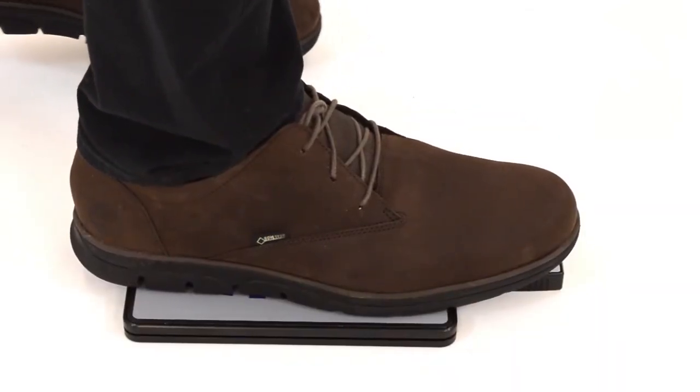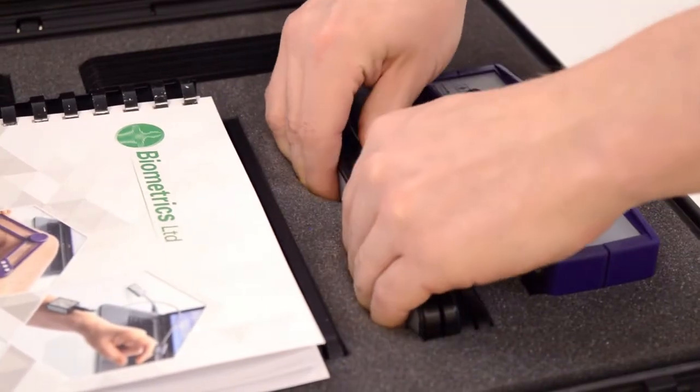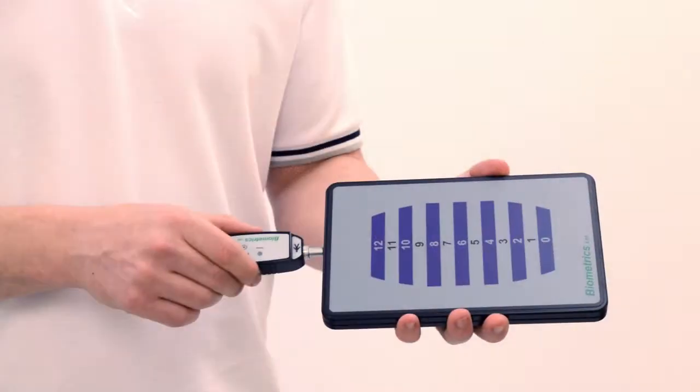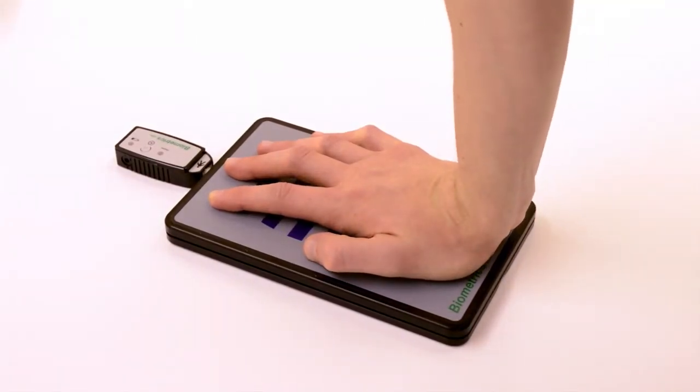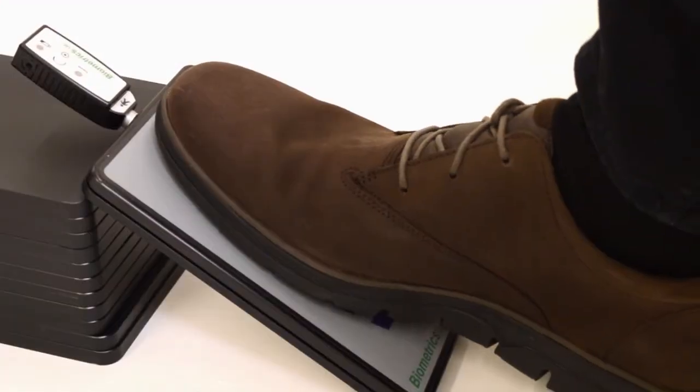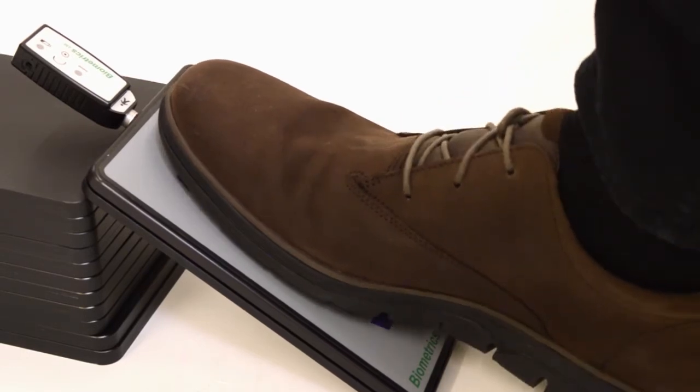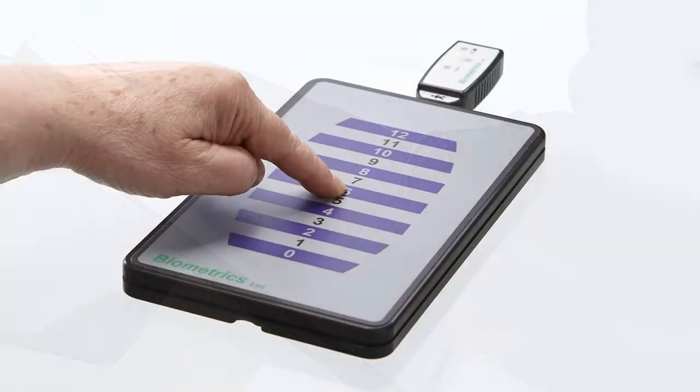The e-link force plate is portable and easily positioned for upper extremity weight bearing for the hand, arm, and shoulder, standing balance, seated balance, and isometric ankle dorsiflexion or plantar flexion.